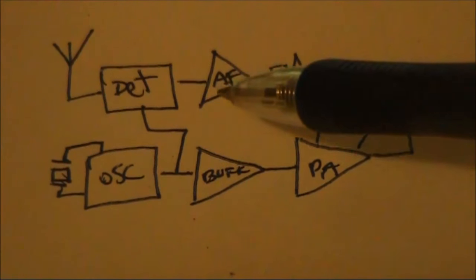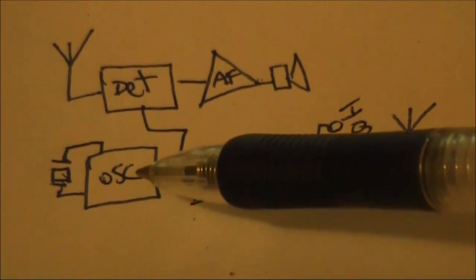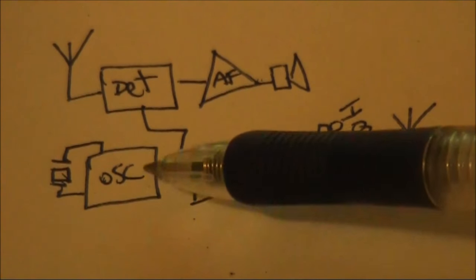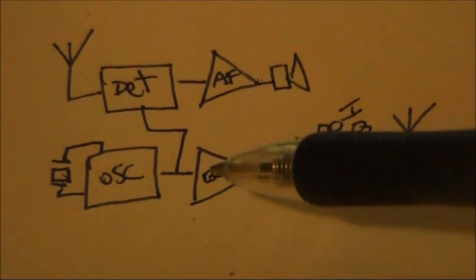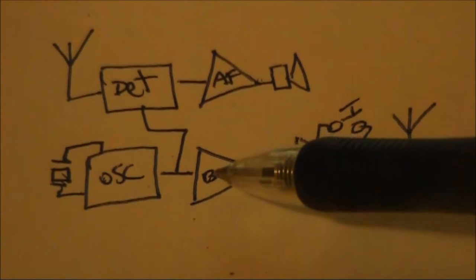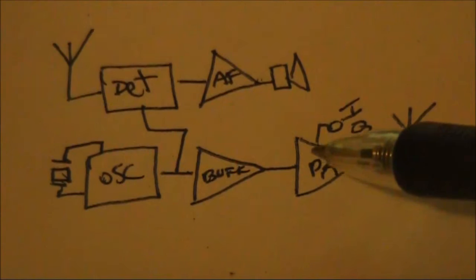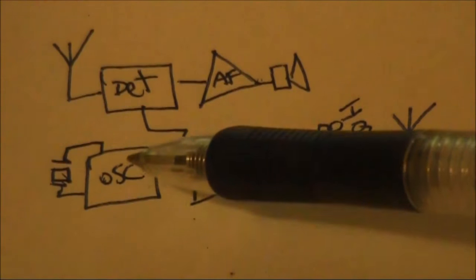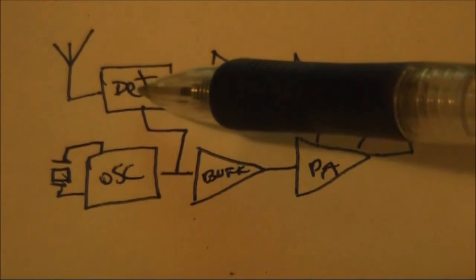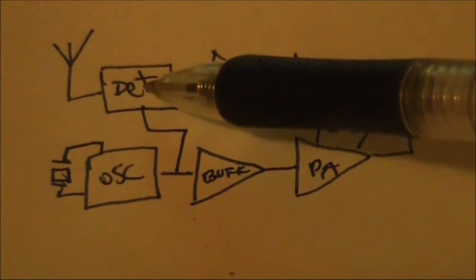In this case, a working receiver automatically means that the local oscillator is operating, as is the detector and the audio amplifier stage. If there's something wrong with the transmitter, then you've suddenly isolated it just to these two stages. Similarly, if the transmitter is working and not the receiver, then the receiver problems have to be in these two stages, unique to the receiver.